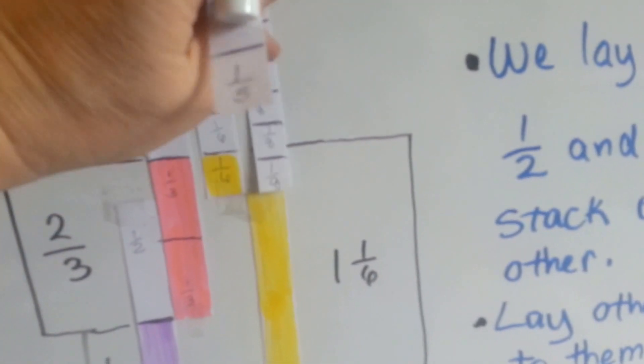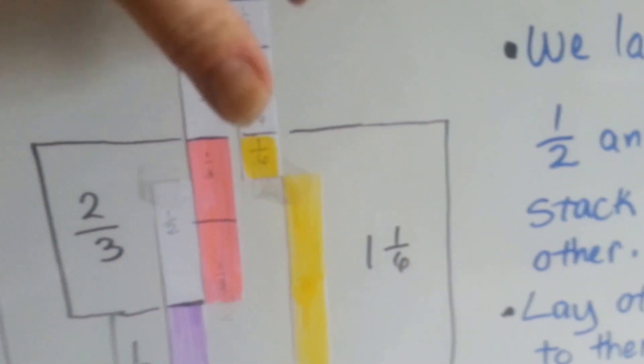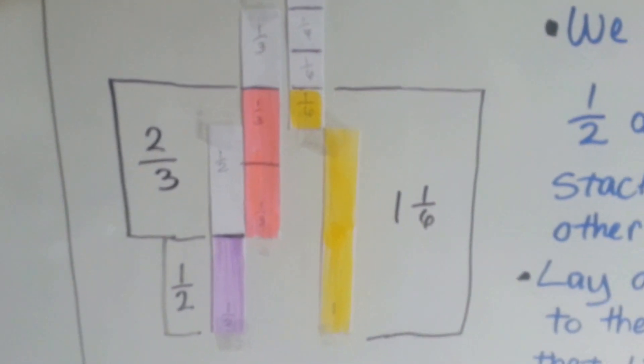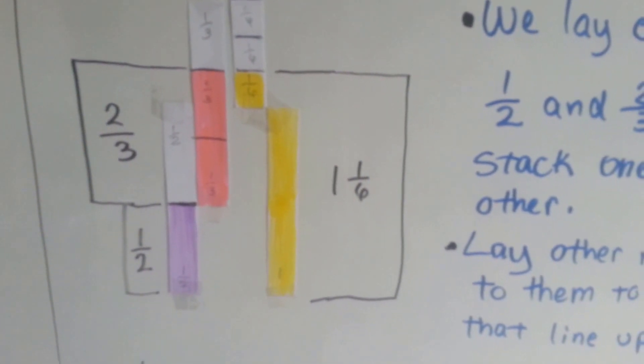And if we go to the next one, we can see the eighths don't line up. But look at the sixths. The sixths line up perfectly so we can say that one-half plus two-thirds equals one and one-sixth.